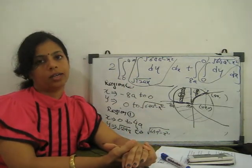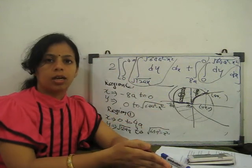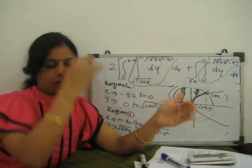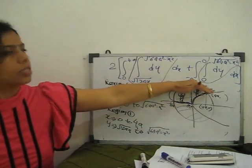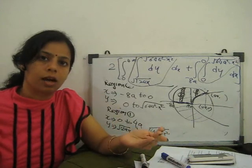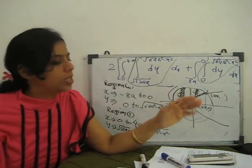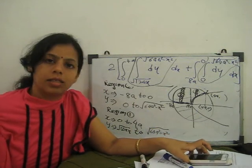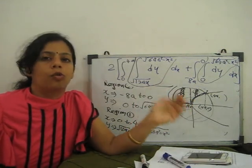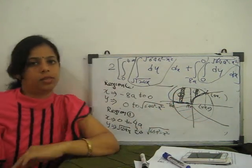First integrate with respect to y applying the limits, then integrate with respect to x. Add both regions and multiply by 2 to get the larger part area. Sometimes we have to break the area and add the regions. Draw the curve first, decide the upper and lower limits — upper curve gives upper limit, lower curve gives lower limit. This is area in Cartesian coordinates. In the next video, we'll see how to find area in polar coordinates.